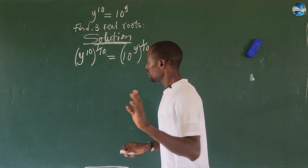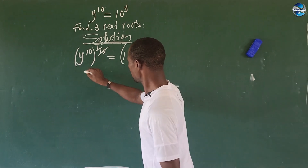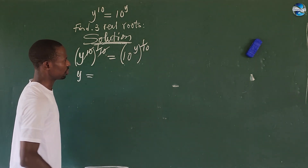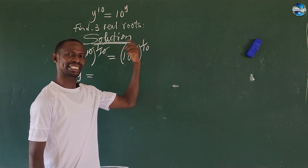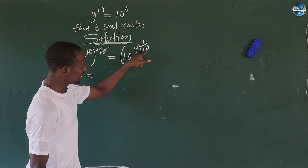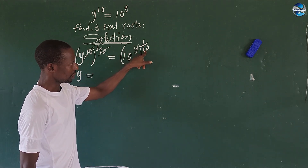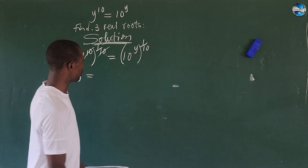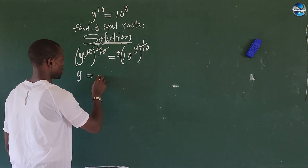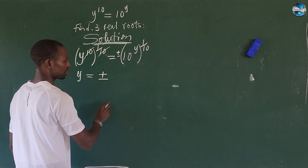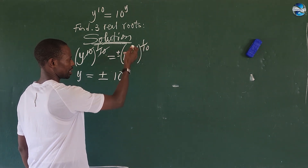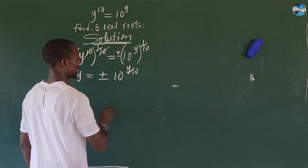Now what happens is those exponents cancel out. But immediately we take the tenth root of any quantity, because this denominator is even, we must introduce a plus-or-minus. So we're going to have y = ±10^(y/10).